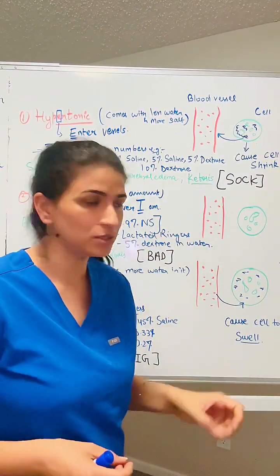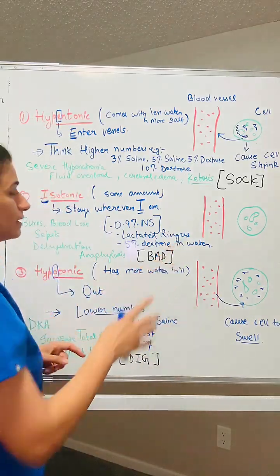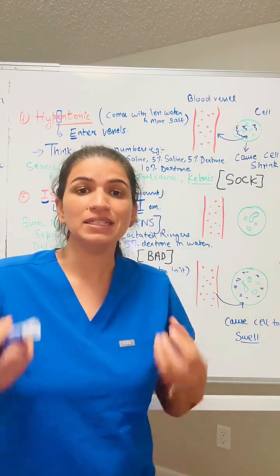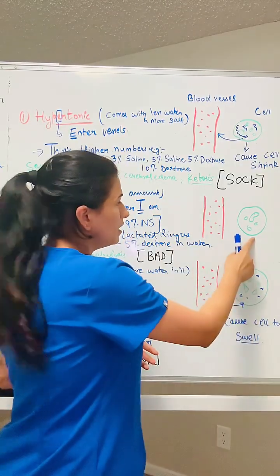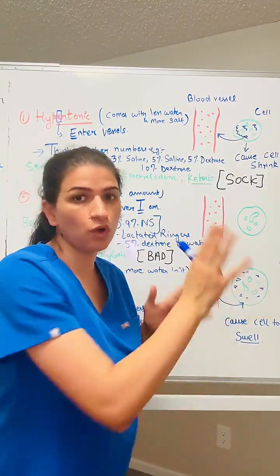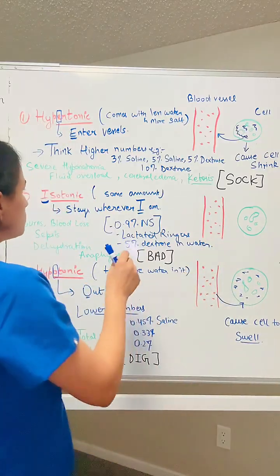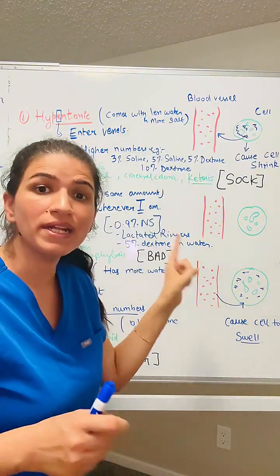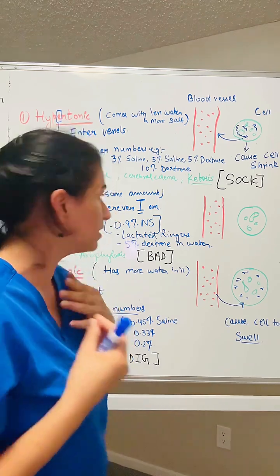Now let's talk about isotonic solution. Isotonic solutions have the same concentration as the patient's body. For that reason, there is no exchange of water between the cell and the blood vessel — it just stays there. You can remember this with the letter I: isotonic means 'I stay wherever I am right now.'